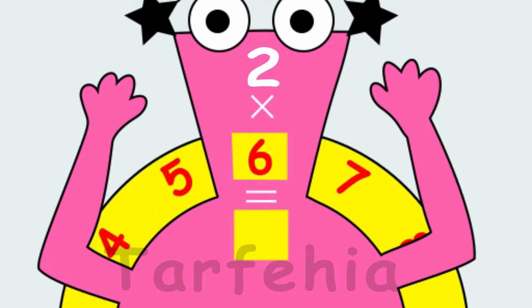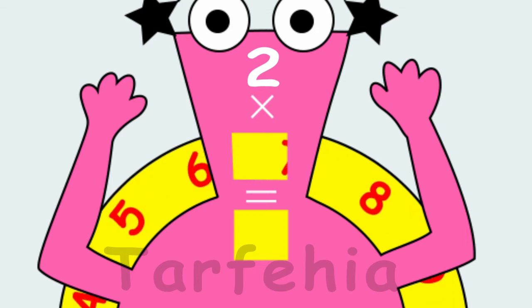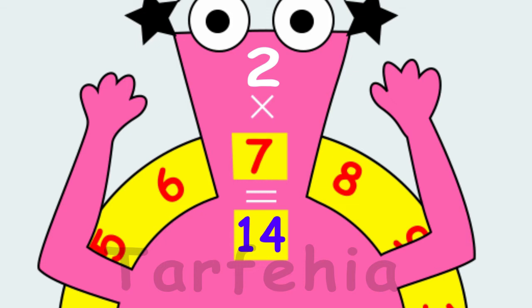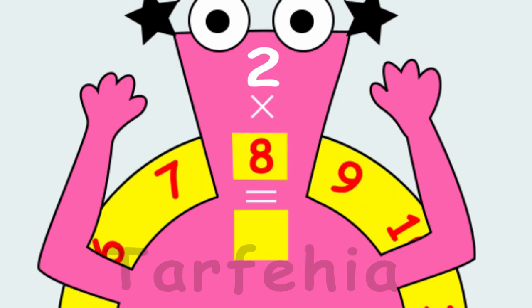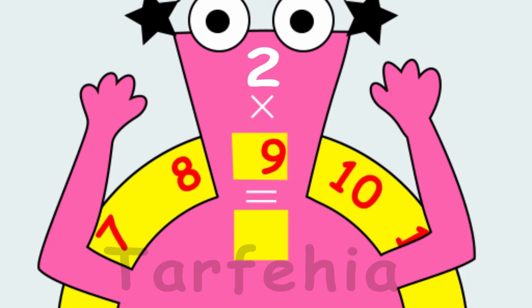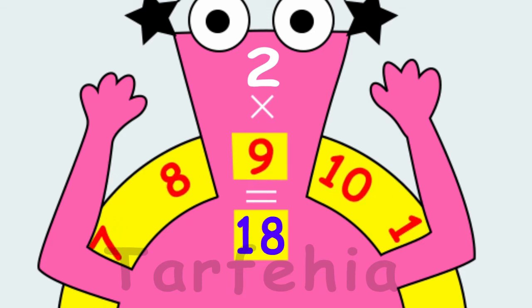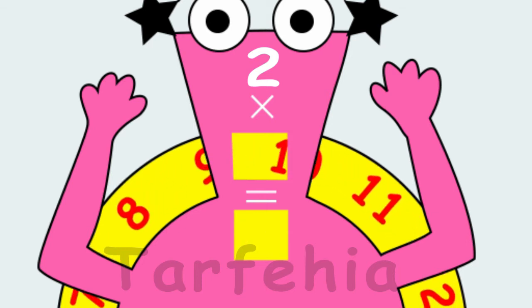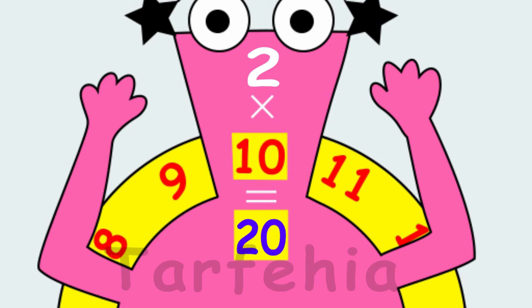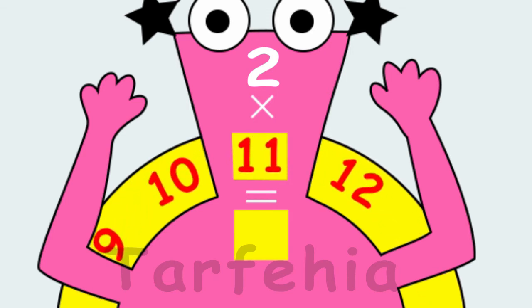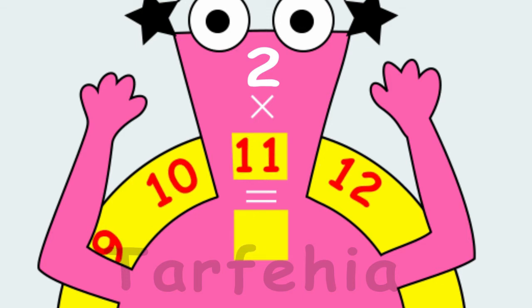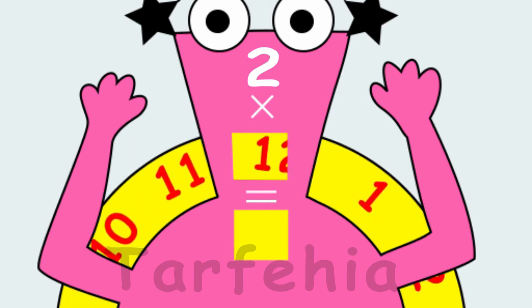2 times 6 equals 12. 2 times 7 equals 14. 2 times 8 equals 16. 2 times 9 equals 18. 2 times 10 equals 20. 2 times 11 equals 22. 2 times 12 equals 24.